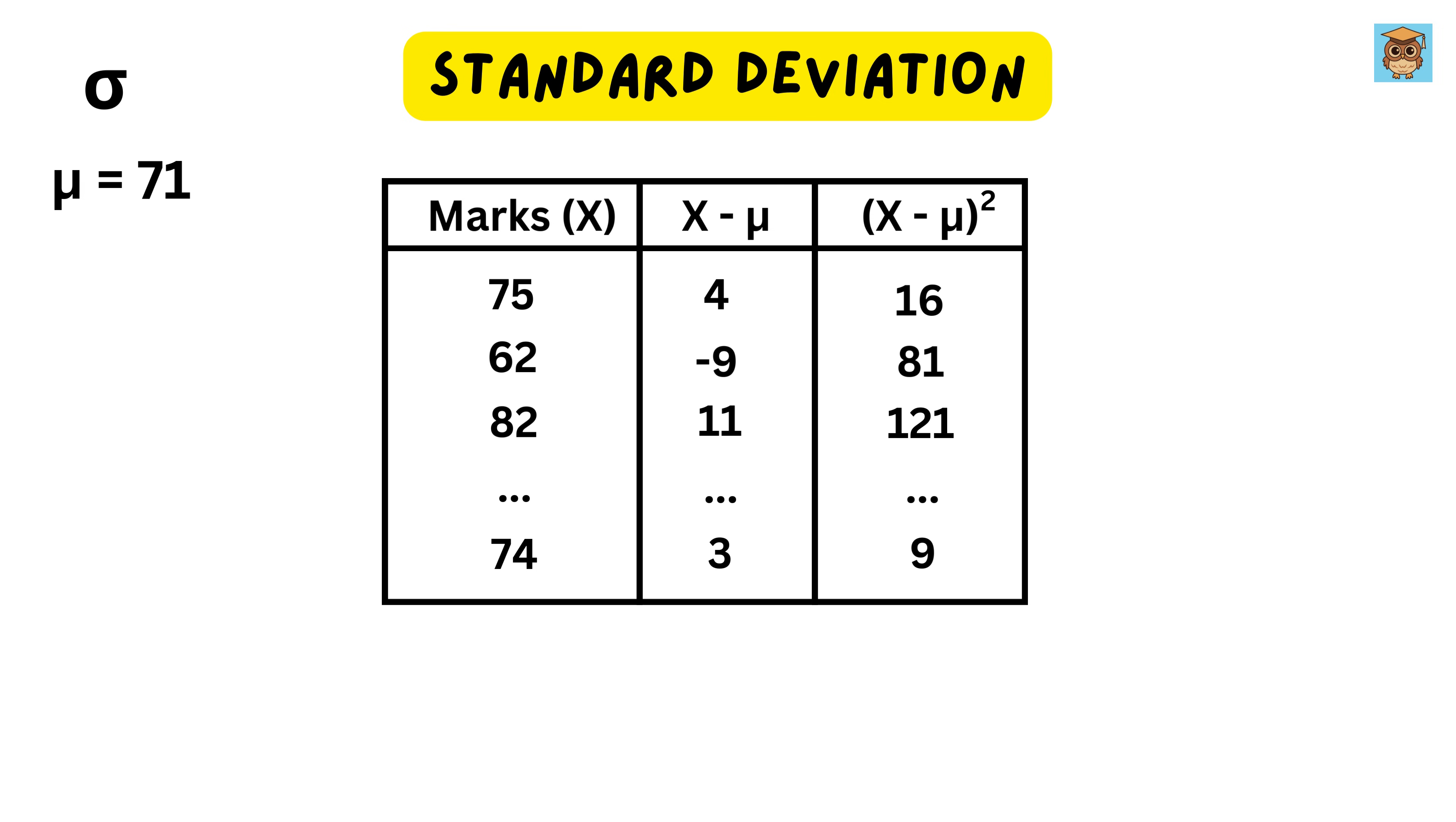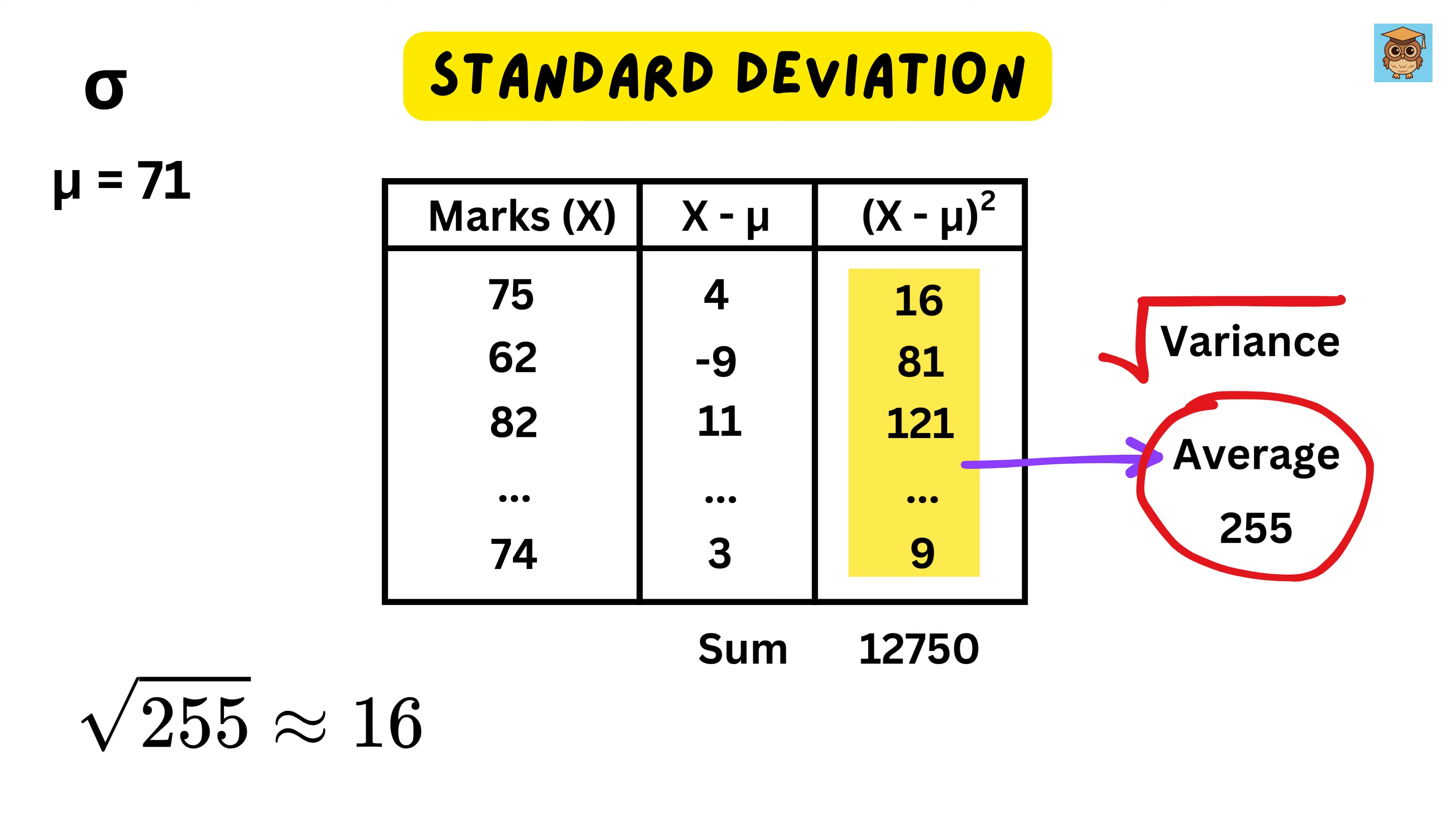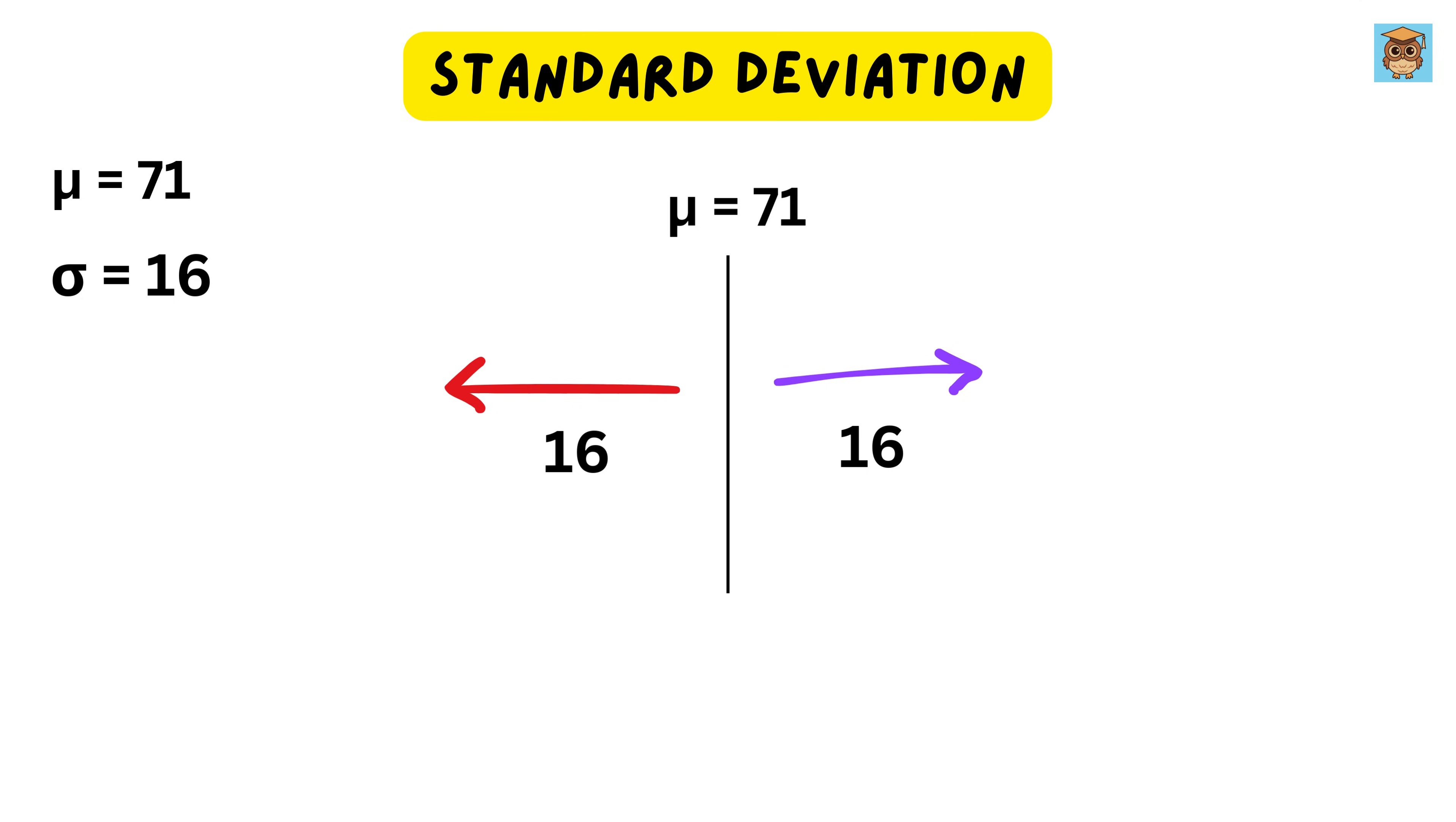Now, all values are positive, and larger differences contribute much more than smaller ones. Now, we find the average of these squared values. Find their sum, which turns out to be this, and then divide it by 50 to get 255. We divide it by 50 because we have 50 students. This value is called the variance. It tells us the average squared difference from the mean. But we are not done yet. Since the variance is based on squared numbers, it's not in the same unit as the original marks. To bring it back to the original scale, we take the square root of the variance. The square root of 255 is about 16. This final number is the standard deviation. In our example, the standard deviation is 16, which means that most students scored within 16 marks of the average.